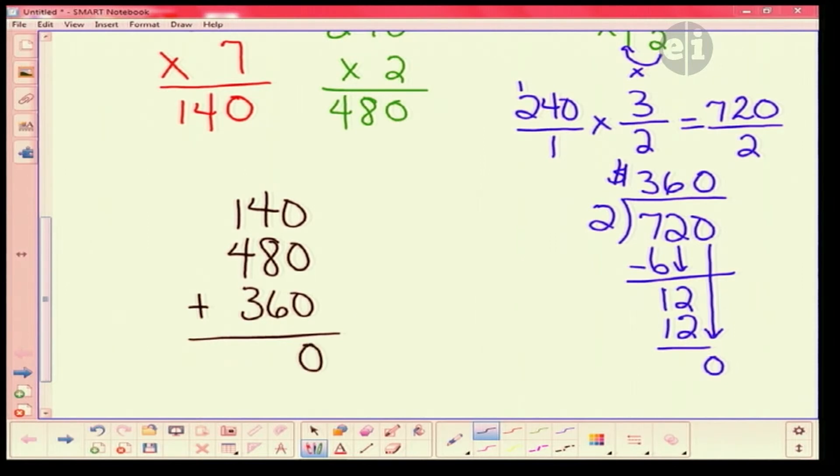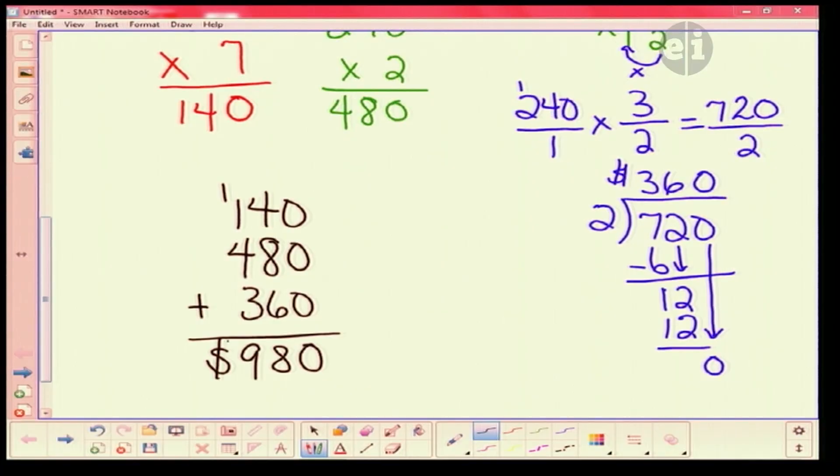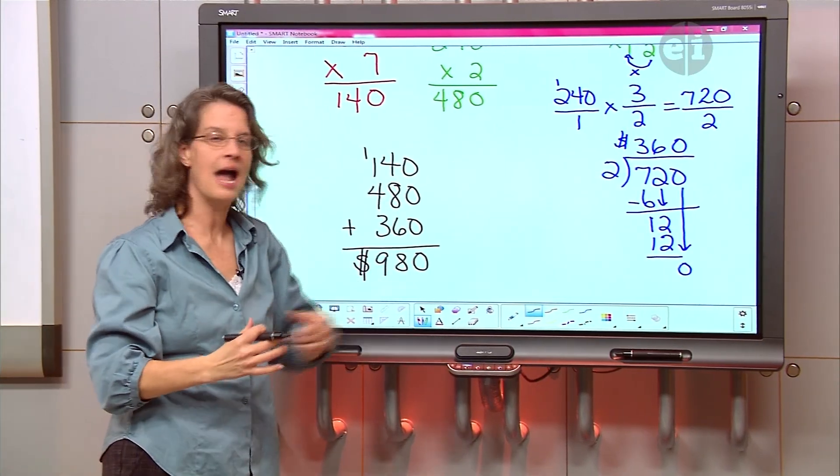Zero plus zero is zero. What's four plus eight? Twelve. Now add six more to that. Eighteen. Carry the one. And one plus one. Two. Plus four. Six. Plus three more. Six plus three. Nine. So the store spent $980 total to restock all of those ties.